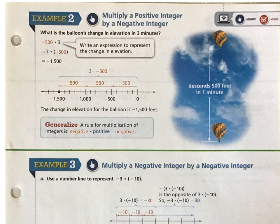What is the balloon's change in elevation in 3 minutes? When you take a look over here on the right side of the page where you see the picture, you see a hot air balloon, and it says it descends 500 feet in 1 minute. We're looking for the balloon's change in elevation in 3 minutes. Again we have a word that's going to indicate direction. Descending means going down. So if it goes down 500 feet in 1 minute, we need to determine how many feet would it drop in 3 minutes. So essentially we're taking 500 times 3.